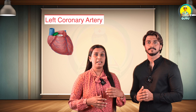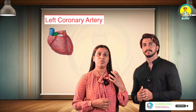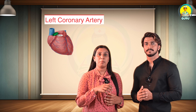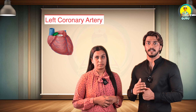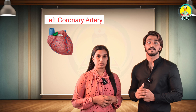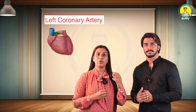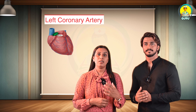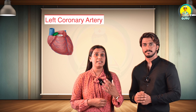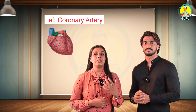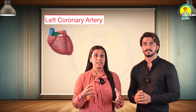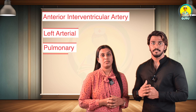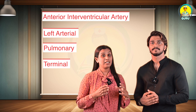The left coronary artery is larger than the right coronary artery. It arises from the posterior aortic sinus of the ascending aorta and passes forward between the pulmonary trunk and the left auricle. Here it gives off the anterior interventricular branch, which runs downward in the interventricular groove. The further continuation of the left coronary artery is the circumflex artery, which runs to the left in the left coronary sulcus, winds around the left border of the heart near the posterior interventricular groove, and anastomoses with the right coronary artery.